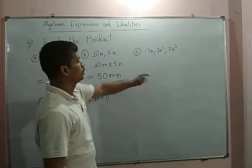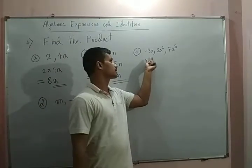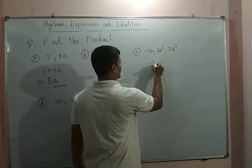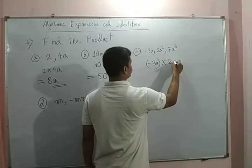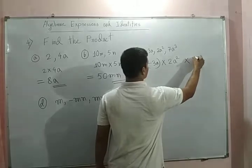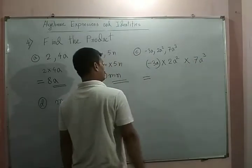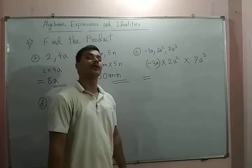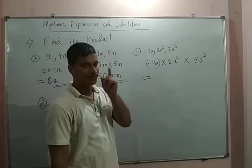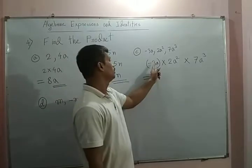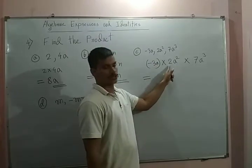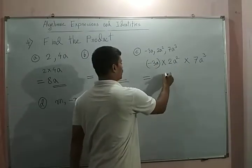Next we have three monomials: one is minus 2a, one is 2a square, and one is 7a cube. Same way, we will see the numericals first, then the algebraic variables. Three twos are six, six sevens are forty-two.